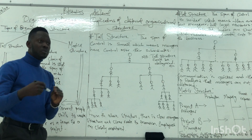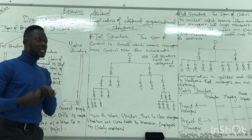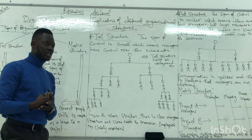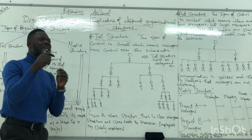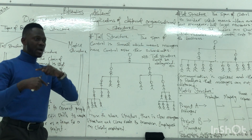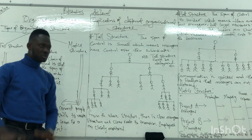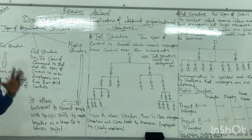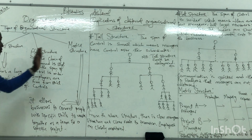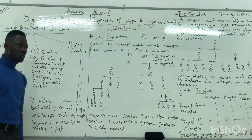Each company would have what they operate on. There are some companies that are manufacturing, and there are some companies that are sales. So the kind of operations you are involved in will determine the kind of organizational structure you use. The big types of organizational structure we have are: the tall structure, the flat structure, and the matrix. Those are the main kinds of organizational structure.